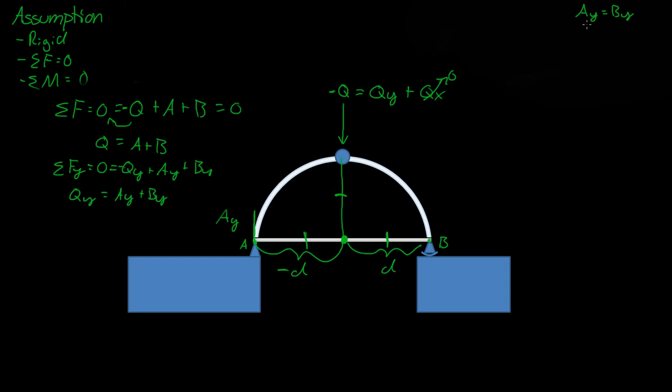And we know that AY is equal to BY, so then QY is equal to AY plus AY. So then QY is equal to just 2 AY divided by 2. So then AY is equal to half of what QY is. So now we know what AY is.